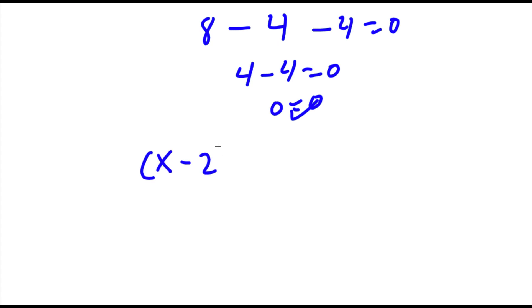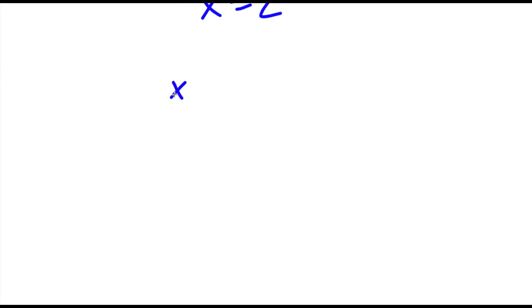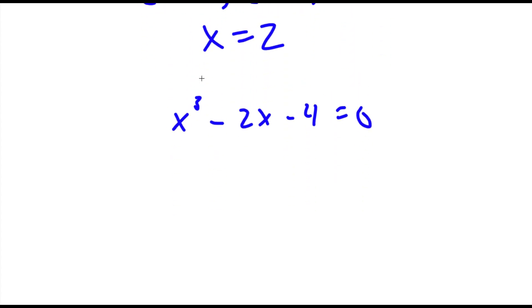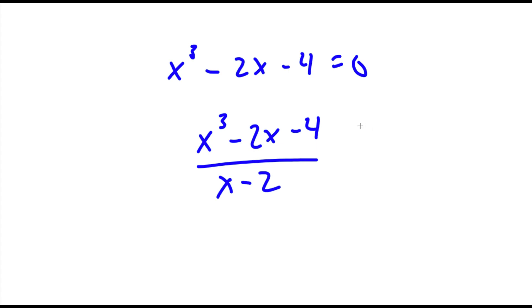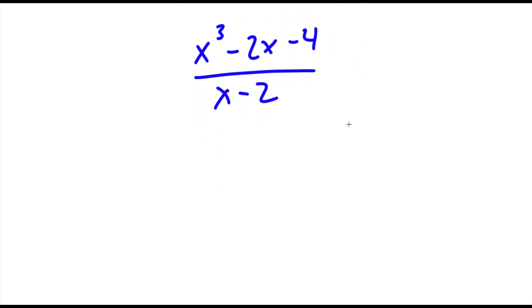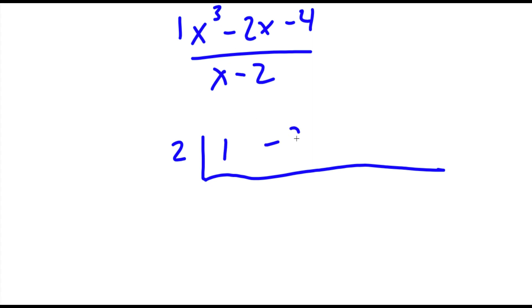Because x equals 2 is a solution, x minus 2 times something equals 0, and we want to find that something. To find it, from our original equation x to the power of 3 minus 2x minus 4 equals 0, we are going to divide by x minus 2. This way we can find our other solutions. I have x to the power of 3 minus 2x minus 4 divided by x minus 2, and I'm going to be using synthetic division. Because this is x minus 2, we have 2 over here. Then we use our coefficients: 1, 0, negative 2, and negative 4 — because we're missing the x squared term.